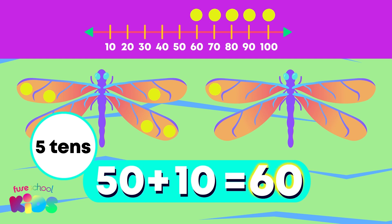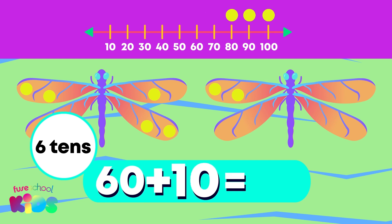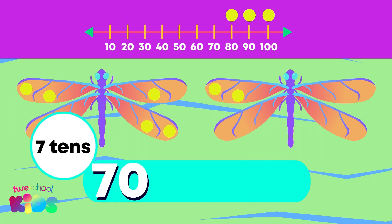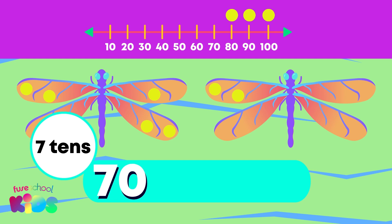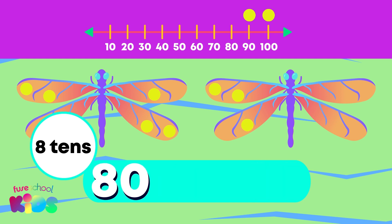Let's add one more 10. 6 tens is 60. Let's add one more 10. 7 tens is 70. Let's add one more 10. 8 tens is 80.